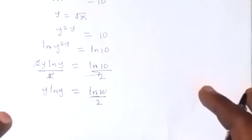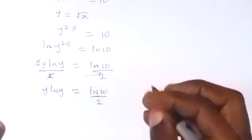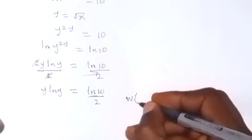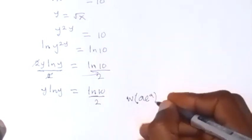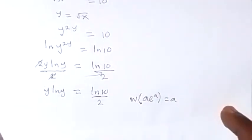And from here, we introduce the W function. From there, we have W of a exponential a, which gives us back a. That's the Lambert function.